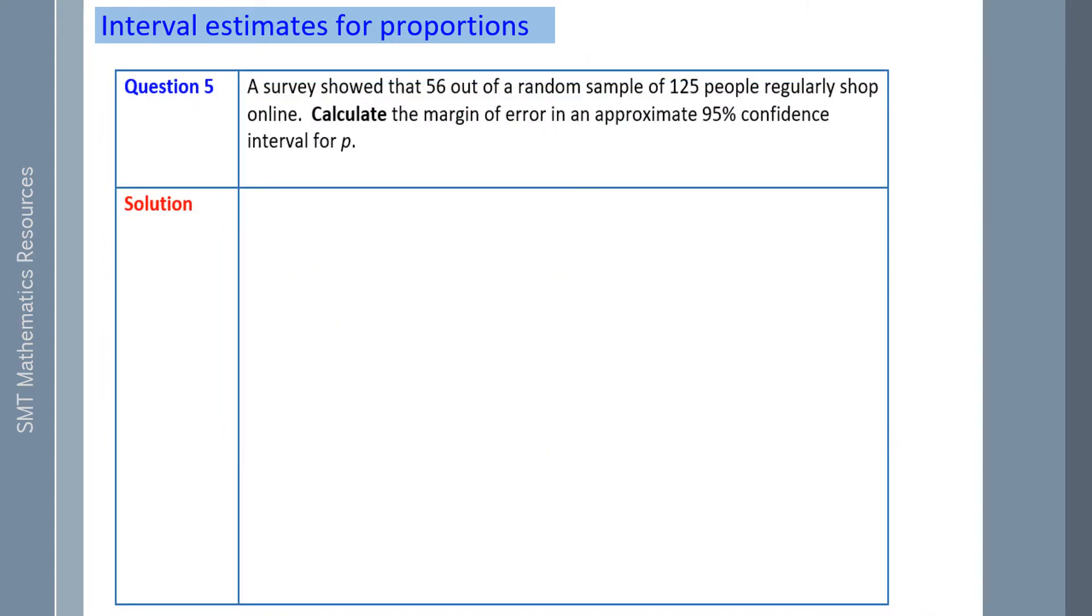Question 5: A survey showed that 56 out of a random sample of 125 people regularly shop online. So our sample size is 125 and 56 were successful. Calculate the margin of error in an approximate 95% confidence interval for P.